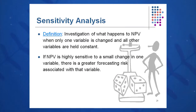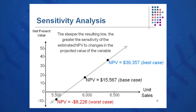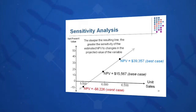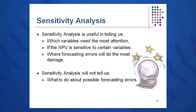The second type of what-if analysis we might do is sensitivity analysis — you may have had this in econ class. It looks at what happens to NPV when only one variable is changed and everything else is held constant. We might change volume and keep price and costs constant. When we have a highly sensitive NPV to unit sales, you'll see a very steep NPV versus unit sales curve. The steeper the line, the greater the sensitivity of the NPV to changes in projected sales volume. Sensitivity analysis will tell us which variables need a lot of attention — most times it's sales volume.